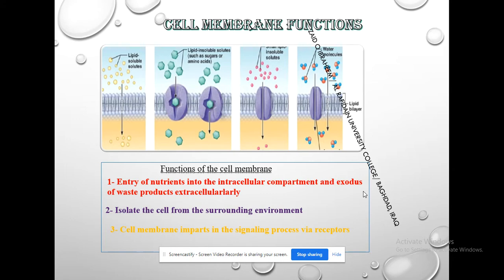Cell membrane functions. The most important functions of the cell membrane is the regulation of entry of nutrients and exodus of waste products. One of the most important functions is to isolate the cell from the surrounding environment and also perform the signaling function.